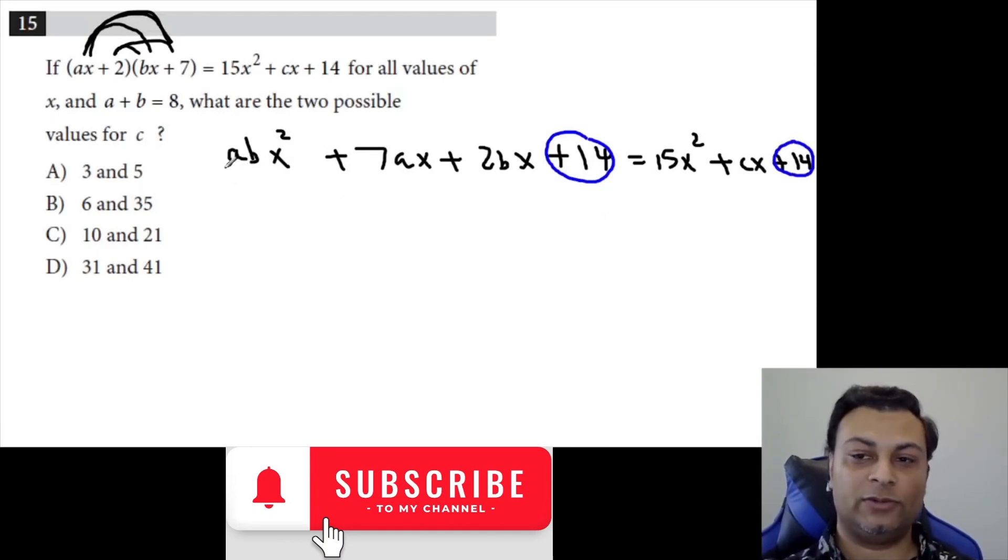There's an AB here, which is the coefficient of X squared, and that's 15. So AB equals 15.